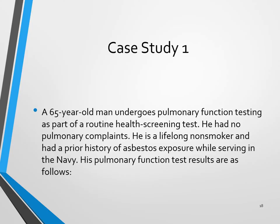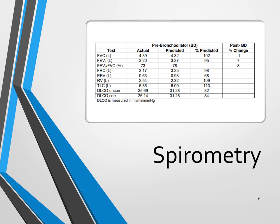Let's go over a couple of case studies regarding pulmonary function and DLCO. We have a 65-year-old man who undergoes a pulmonary function test as part of his routine health screening. He had no pulmonary complaints, he's a lifelong non-smoker, but he did have a prior history of asbestos exposure while serving in the Navy. His pulmonary function results are as follows. The spirometry testing includes the predicted value, actual value, percent predicted, and pre and post bronchodilator study — a pretty comprehensive test.